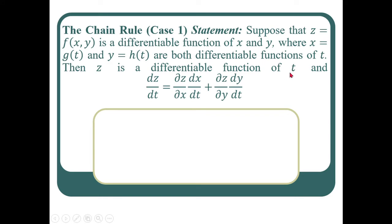Here, t is the independent variable. Since x = g(t) and y = h(t) are differentiable functions of t, x and y depend on t. And since z is a differentiable function of x and y, z depends on x and y.